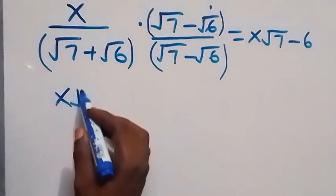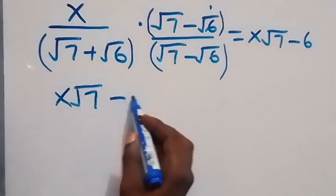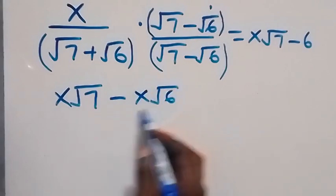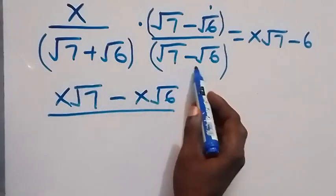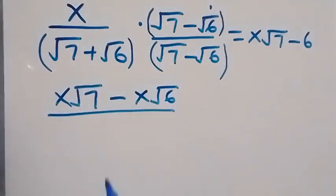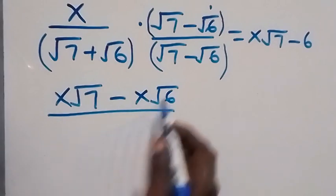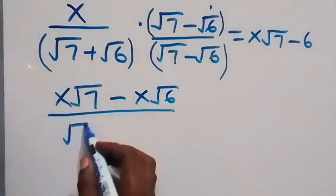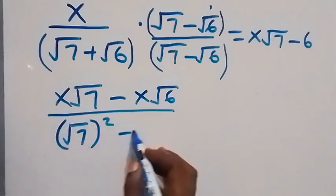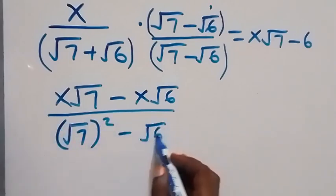So when x opens the bracket here, we have x root 7 then minus x root 6, then divided by, this is in form of a perfect square, difference of two squares. Then we have root 7 square minus root 6 square.